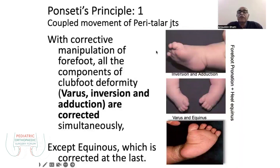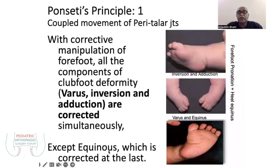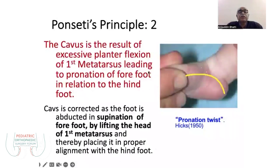When you correct this deformity, to correct the adductus you apply supination and abduction force, and you always get correction of the heel varus and heel equinus, except the equinus last, because there is rigid tissue in the equinus that is corrected lastly.